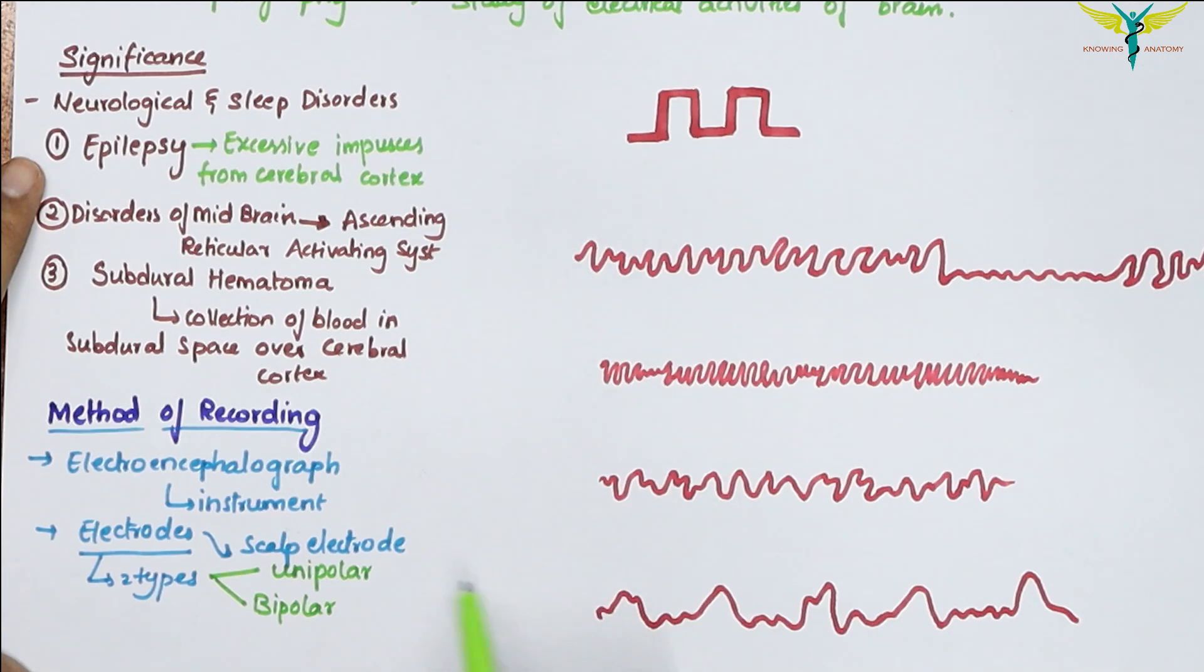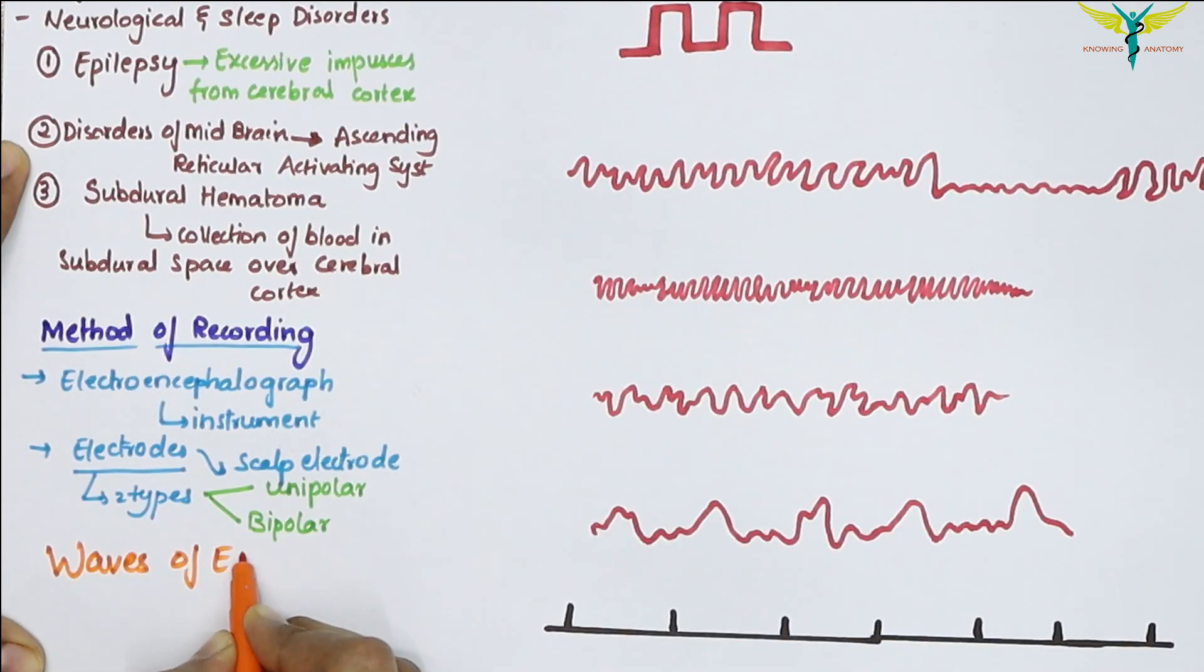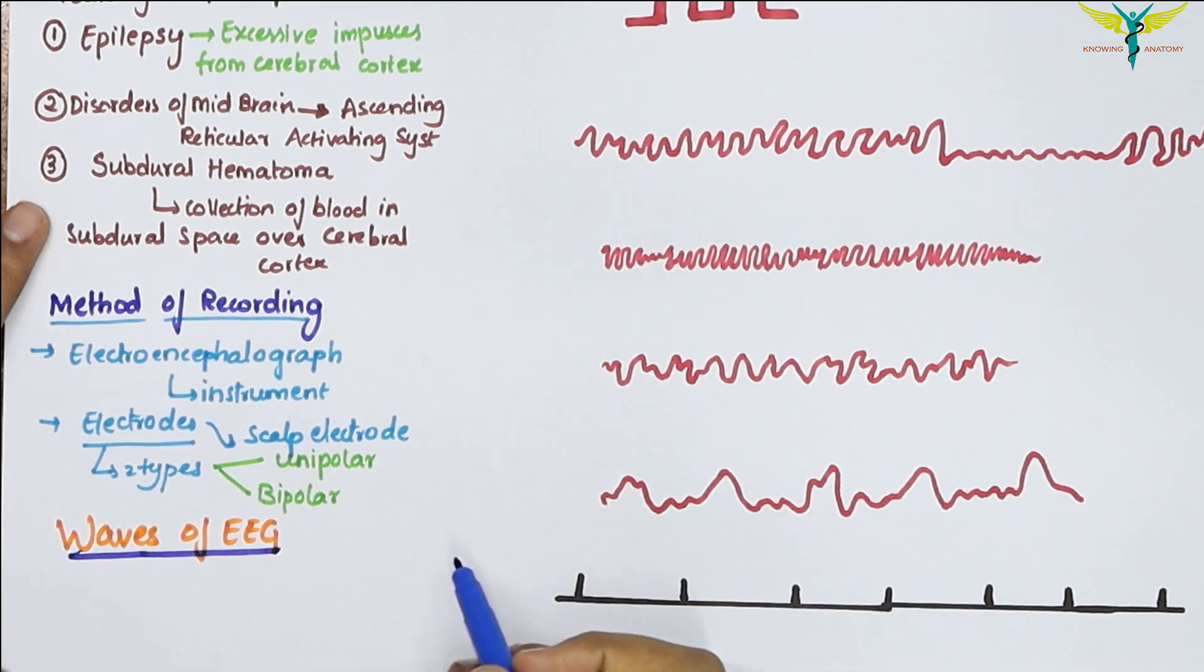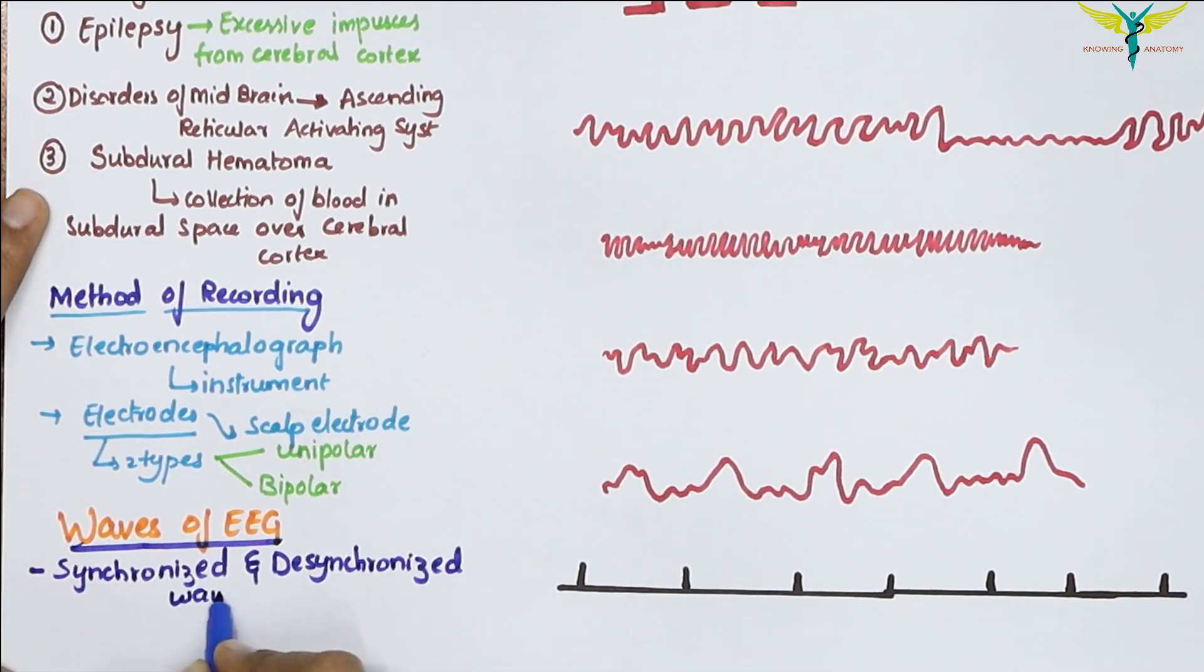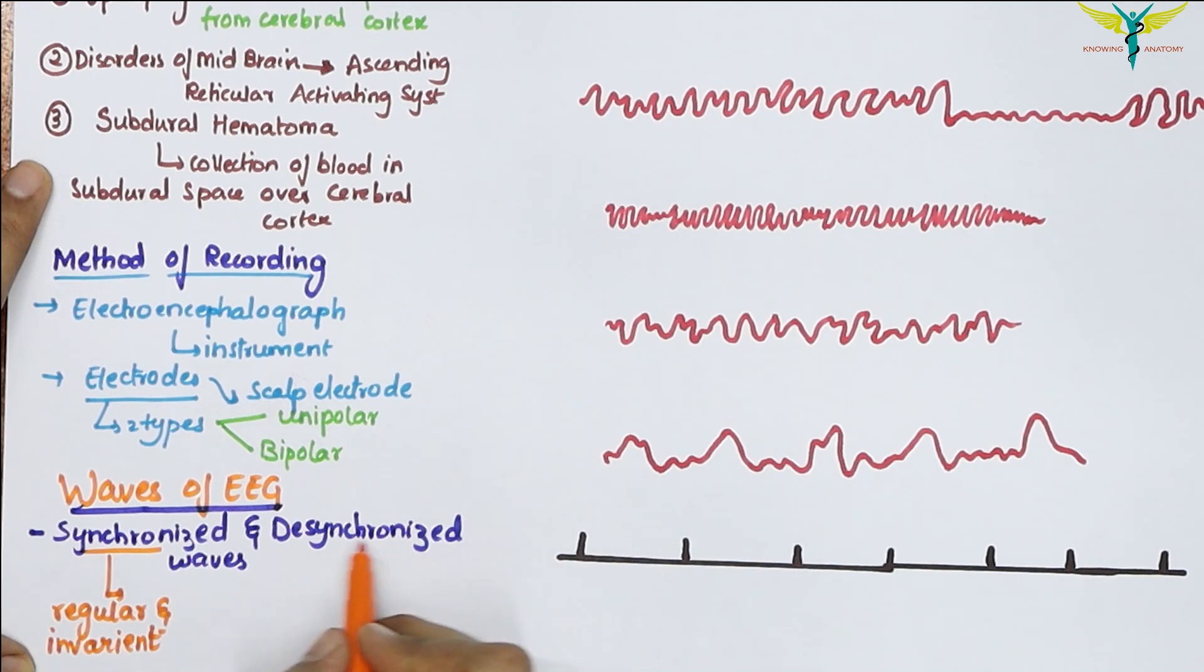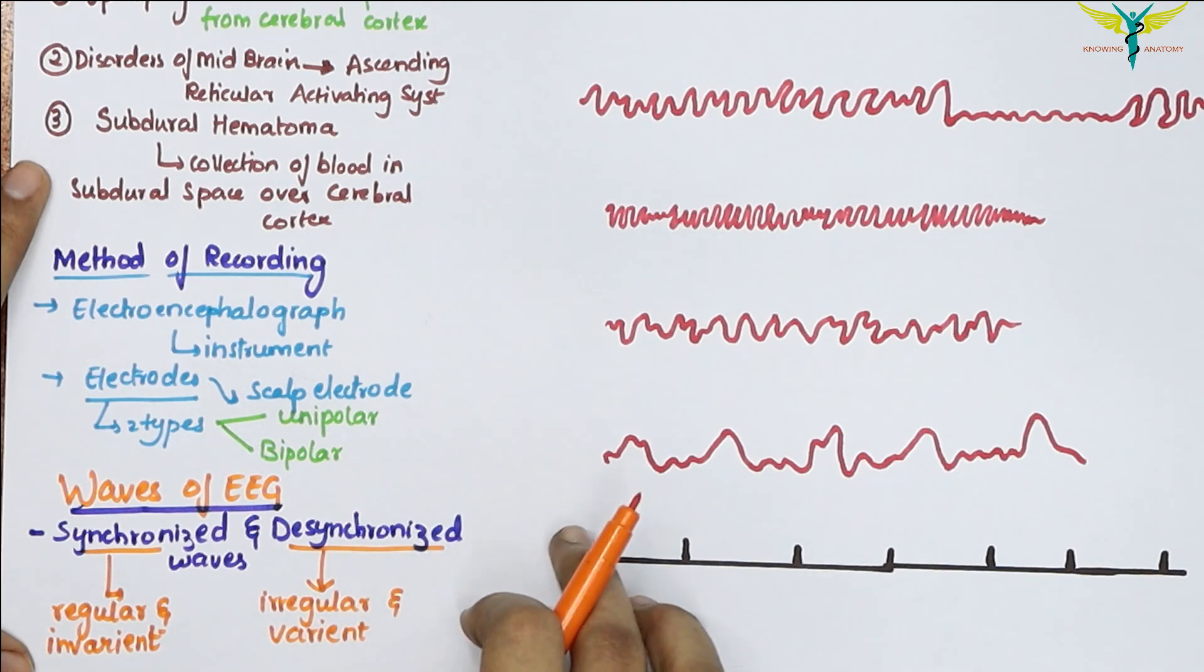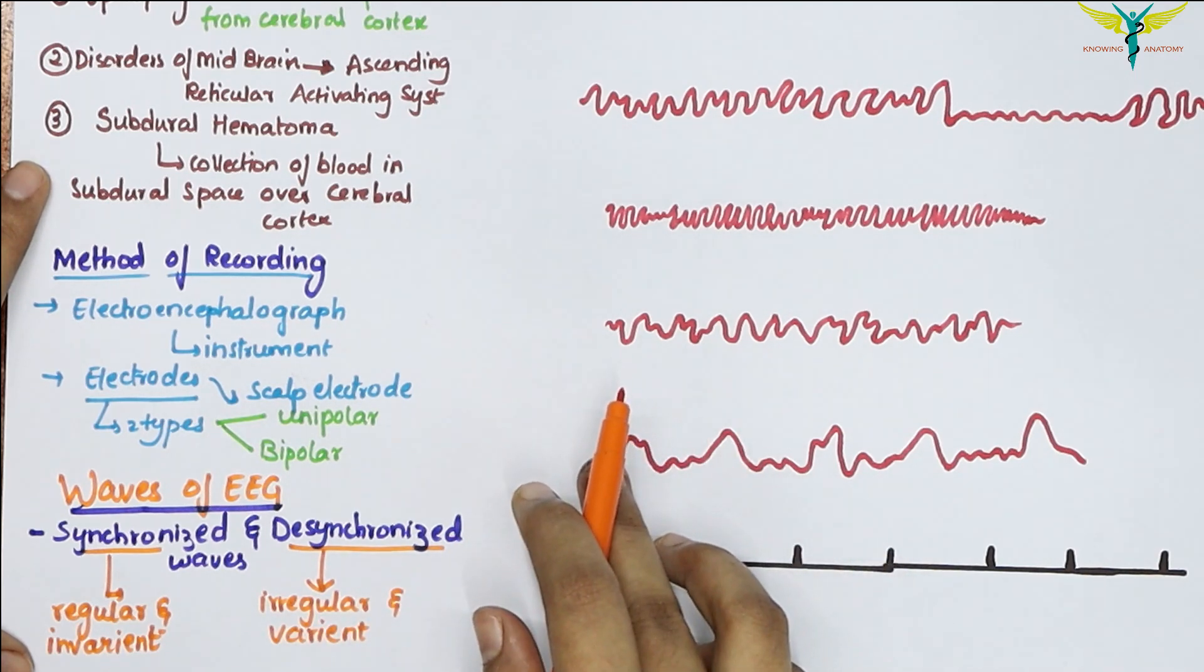Now let's learn about the waves of the EEG. The electrical activity recorded by the EEG may have synchronized or desynchronized waves. The synchronized waves are regular and invariant, whereas the desynchronized waves are irregular and variant.